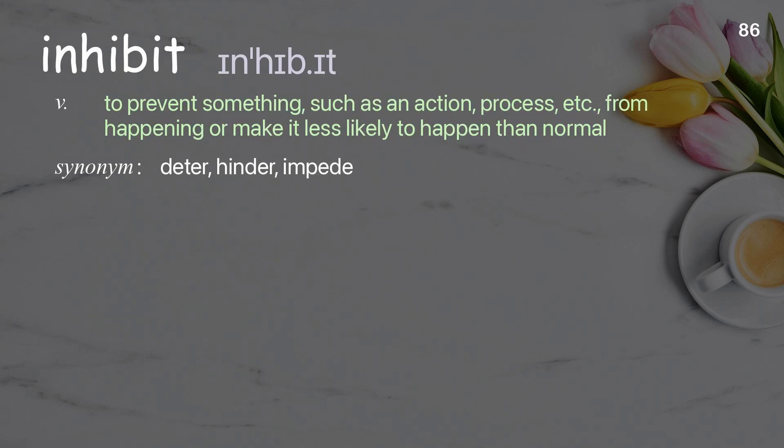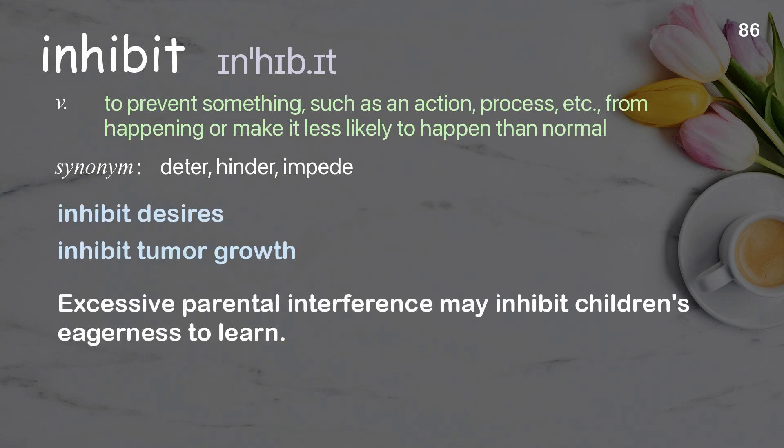Inhibit: to prevent something, such as an action or process, from happening or make it less likely to happen than normal. Examples: inhibit desires, inhibit tumor growth. Excessive parental interference may inhibit children's eagerness to learn.